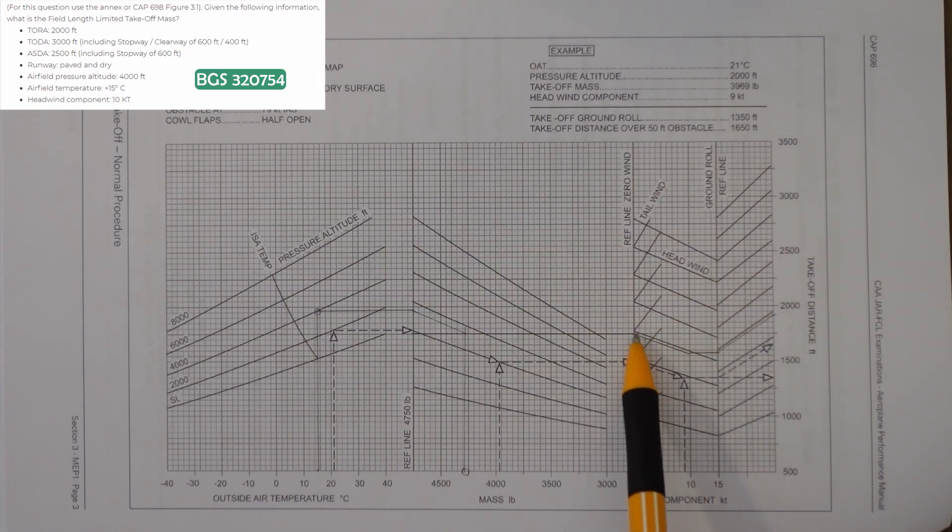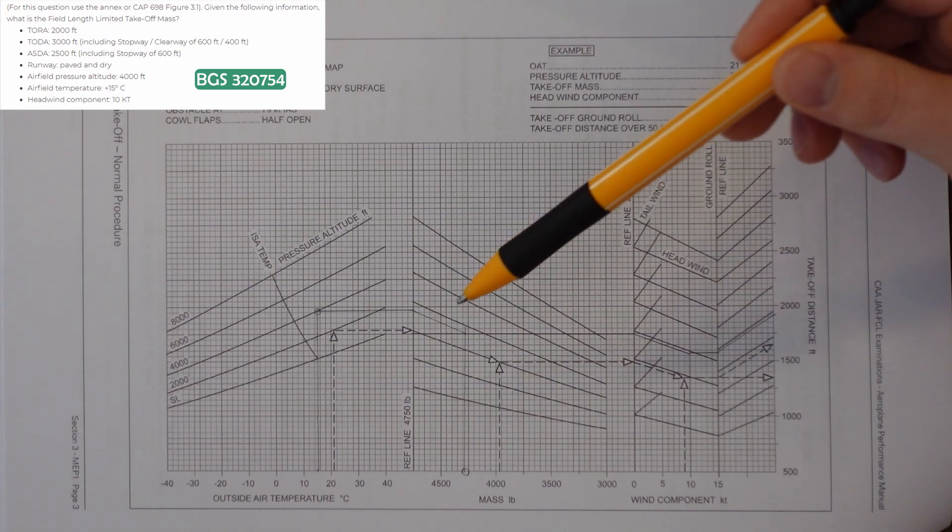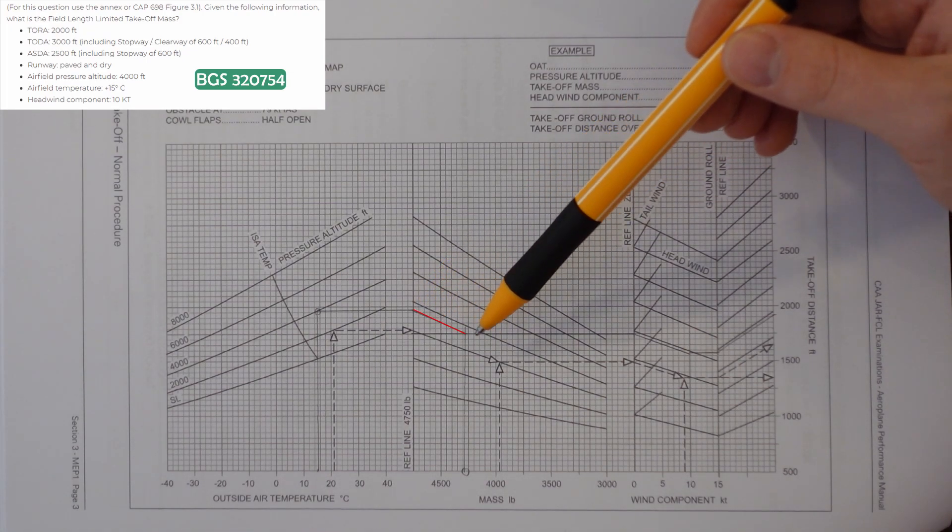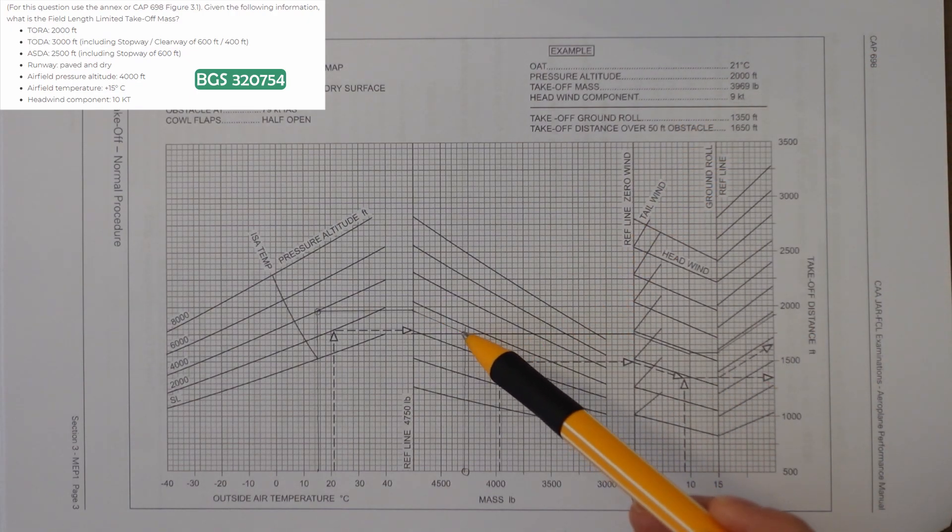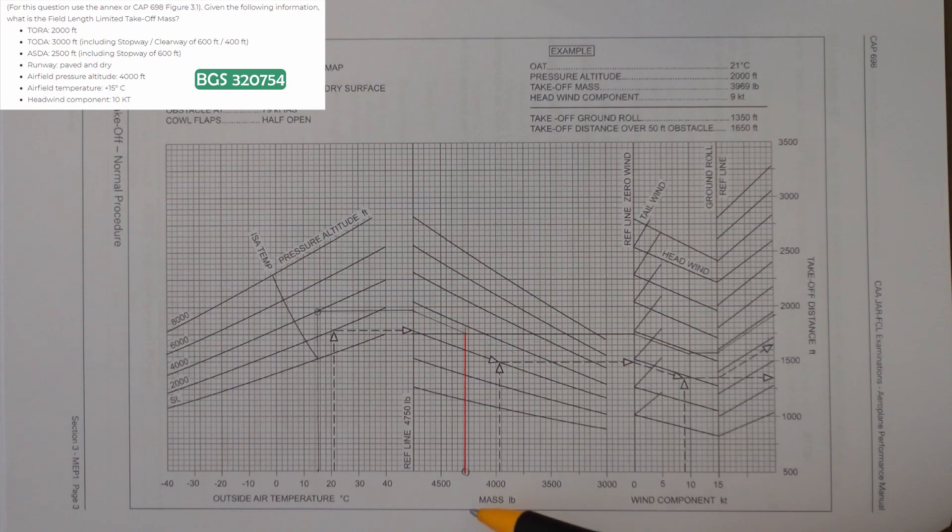Then from the reference line we go straight across. And you'll have a line up here and a line a bit lower down, and you follow the guidelines to match them, basically to make them connect. And the point where they do connect, you go straight down and you find the mass. So the mass here looks like it's about 4,300 pounds.